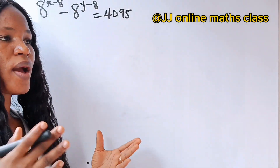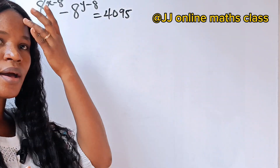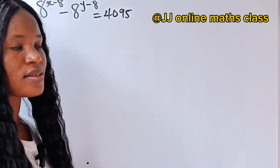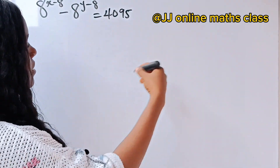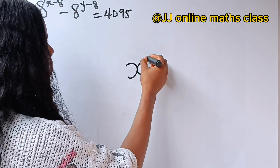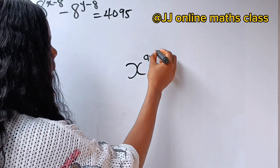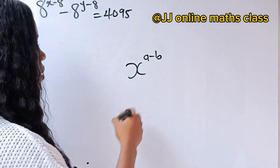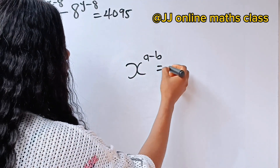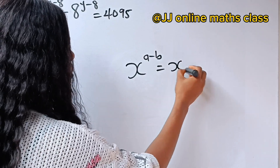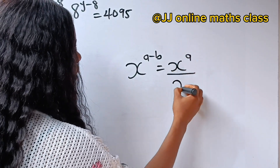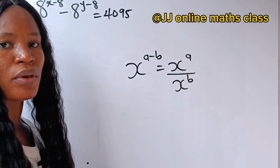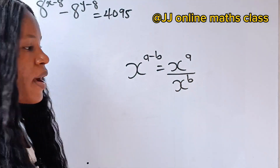First, we are going to recall the law of indices that states that x raised to the power of a minus b is the same thing as x raised to the power of a divided by x raised to the power of b.